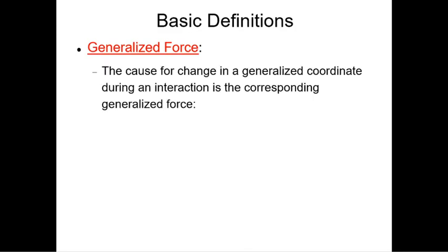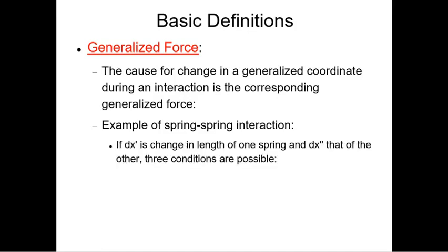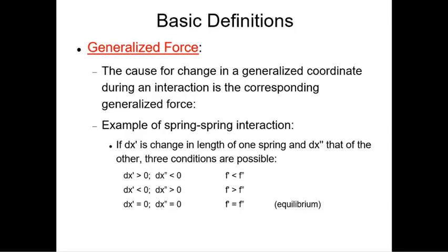The cause for the change in generalized coordinate during an interaction is the corresponding generalized force. In the spring-spring interaction, if dx' is the change in length of one spring and dx'' is that of the other, three conditions are possible: dx' is positive and dx'' is negative when f' is less than f'', and the opposite when f' is greater than f''.